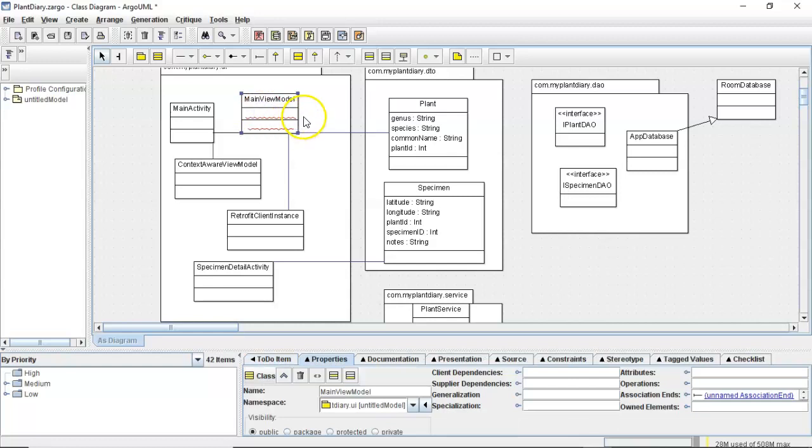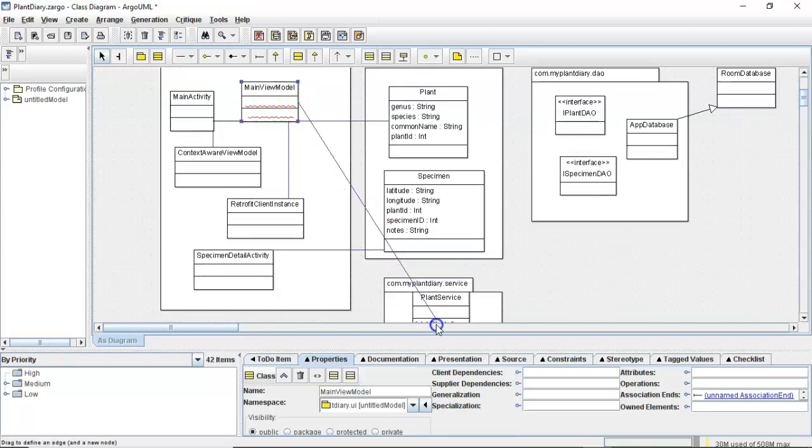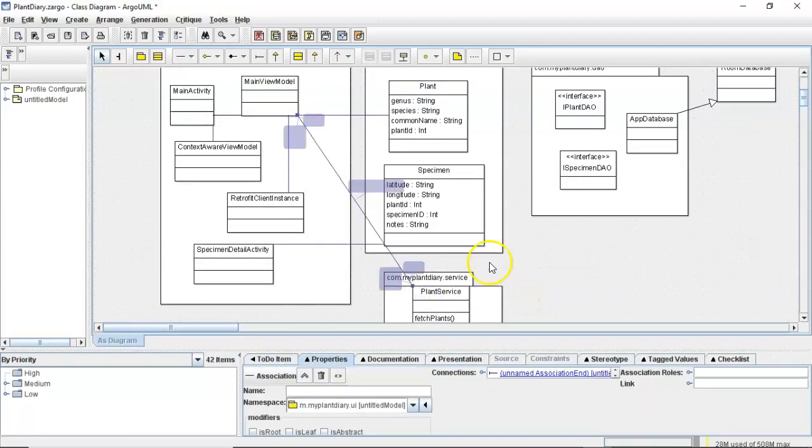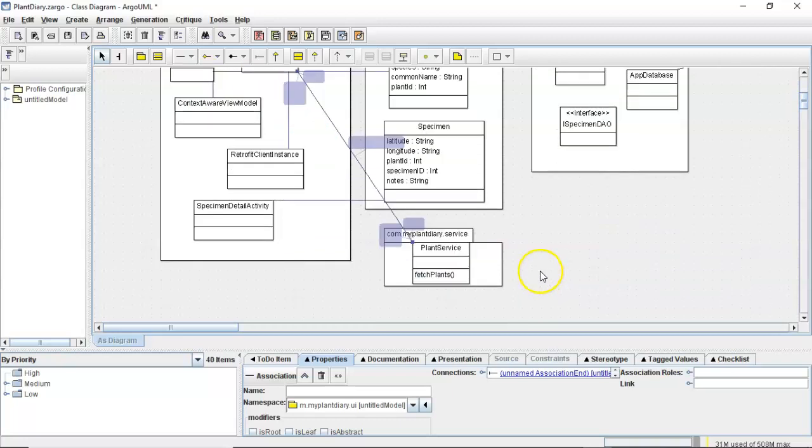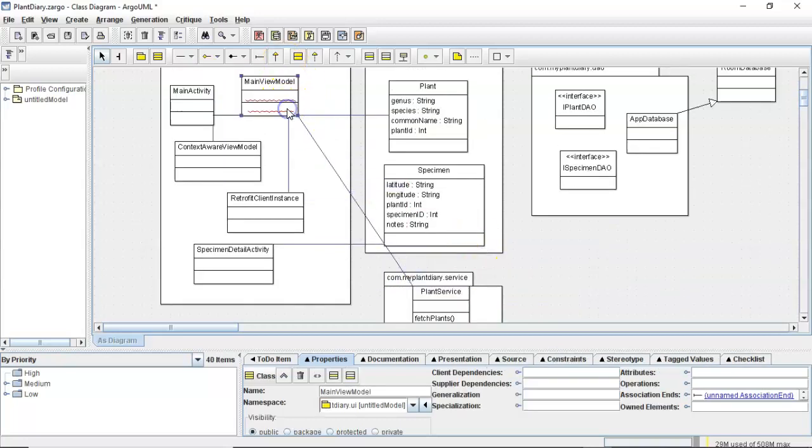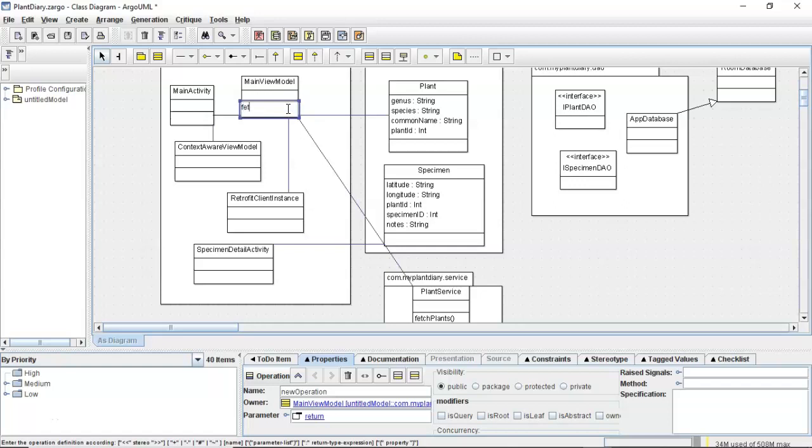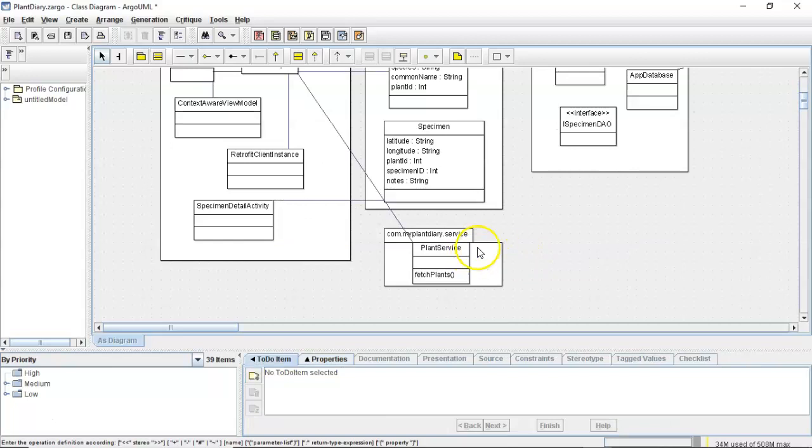And then we'll draw a uses line between our main view model and this plant service. So main view model is what we're going to unit test. It will have an operation called fetch plants as well, or something like that. And that's the function that we're going to test, and we're going to test it by mocking out this plantService. So stay tuned for the next video in the playlist where we'll take a look at some syntax. I look forward to seeing you then. Thank you.